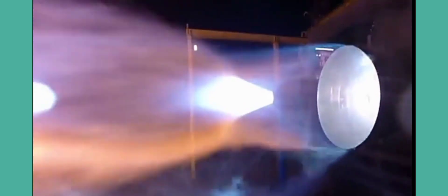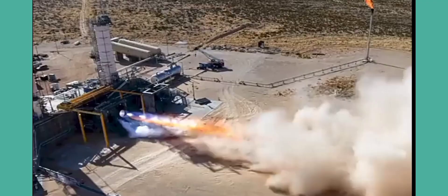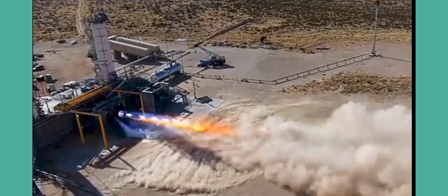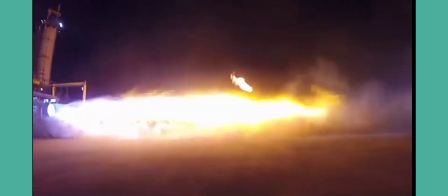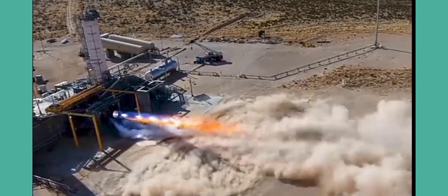The Blue Engine 4, or BE-4, is an oxygen-rich liquefied natural gas-fueled staged combustion rocket engine under development by Blue Origin. The BE-4 is being developed with private and public funding. The engine has been designed to produce 2.4 meganewtons (550,000 lbf) of thrust at sea level.